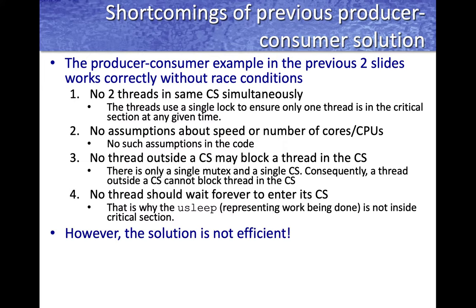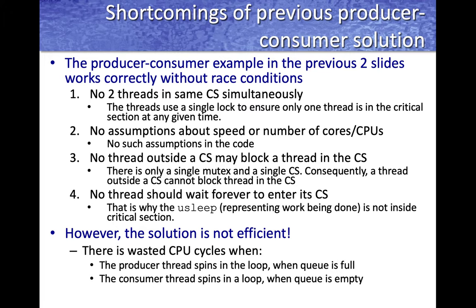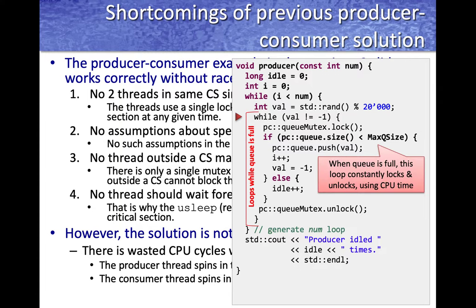However, the solution is not efficient because there are wasted CPU cycles. When the queue is full, producer threads keep spinning — repeatedly locking the queue, checking if it's full, unlocking, and trying again — without getting any useful work done. Similarly, consumer threads spin in a loop when the queue is empty, constantly checking for work. This constant locking and unlocking while making no progress is the source of inefficiency, and this is why it's called busy-wait or spin-lock.